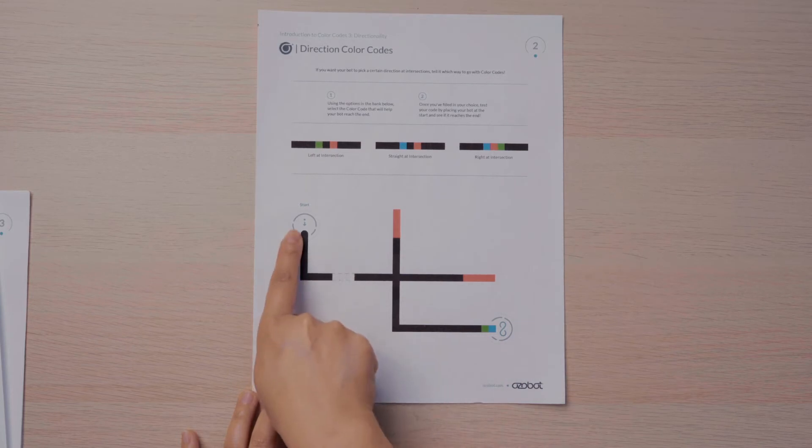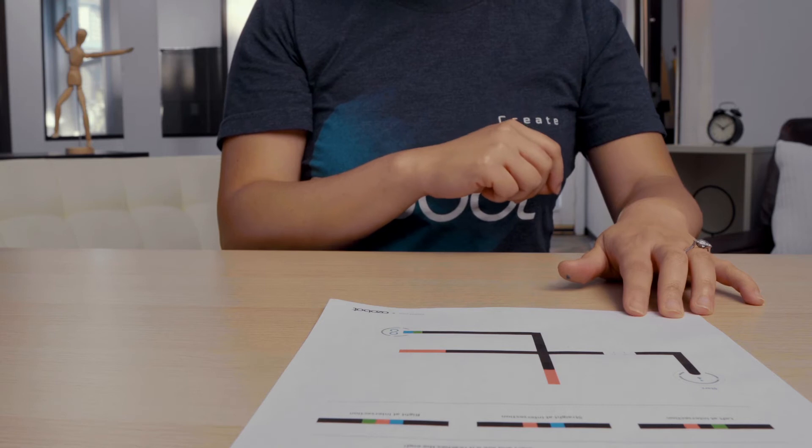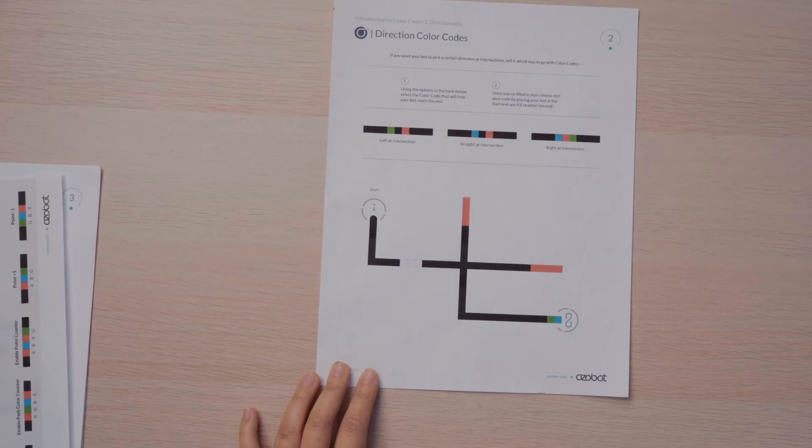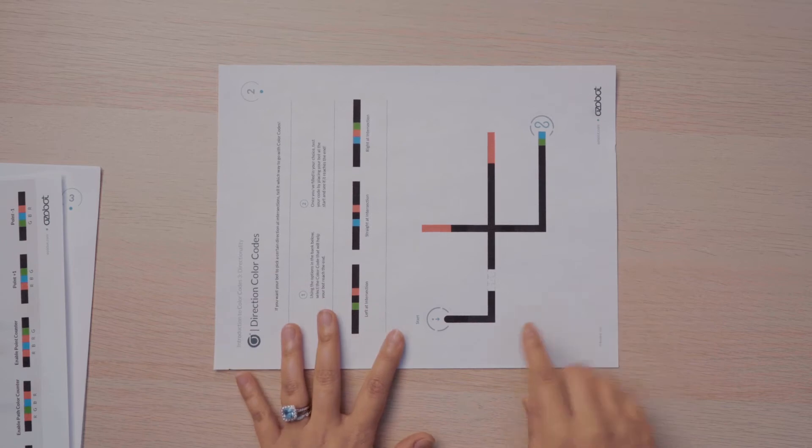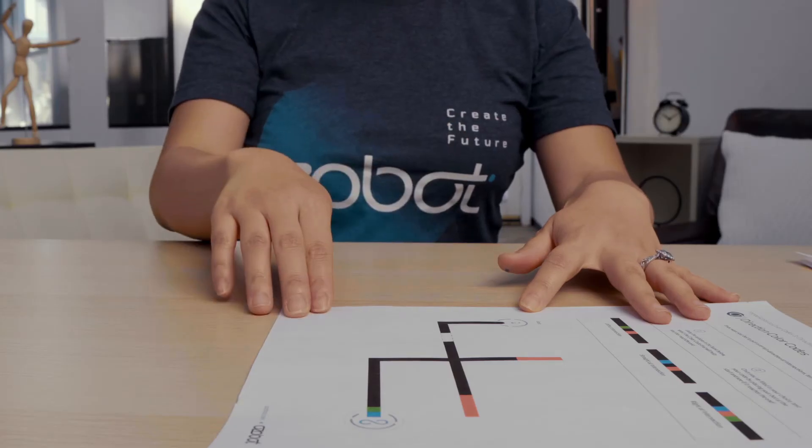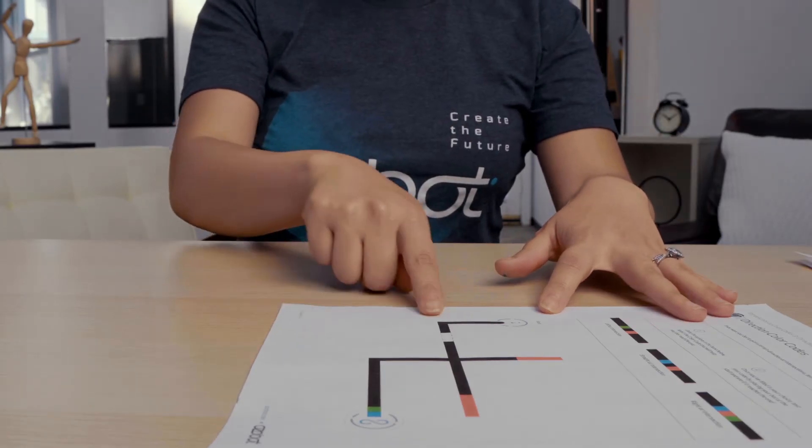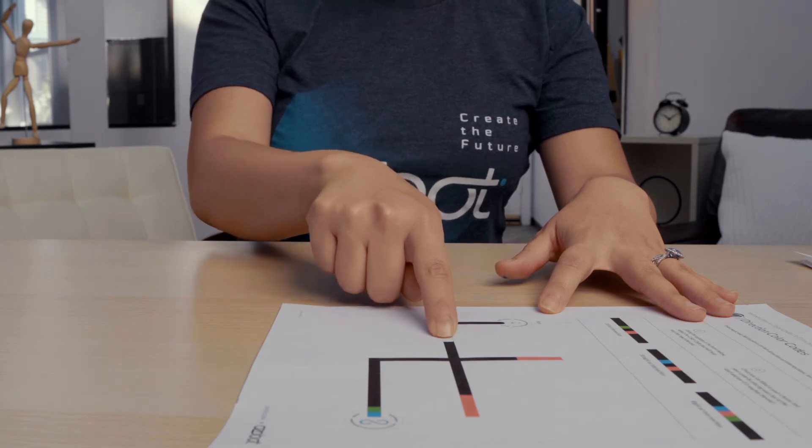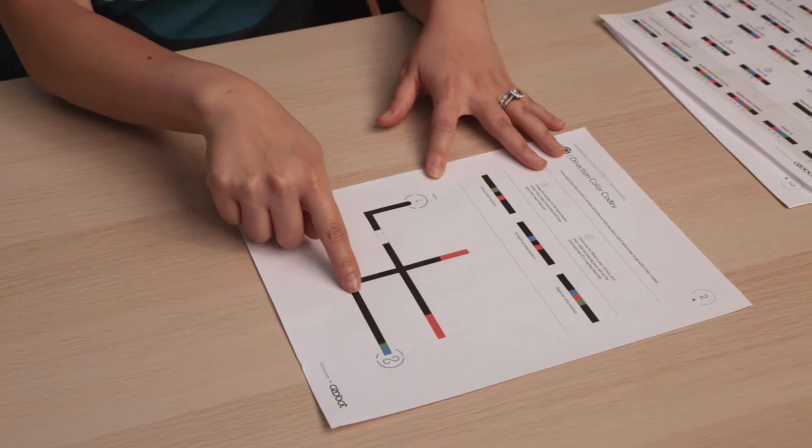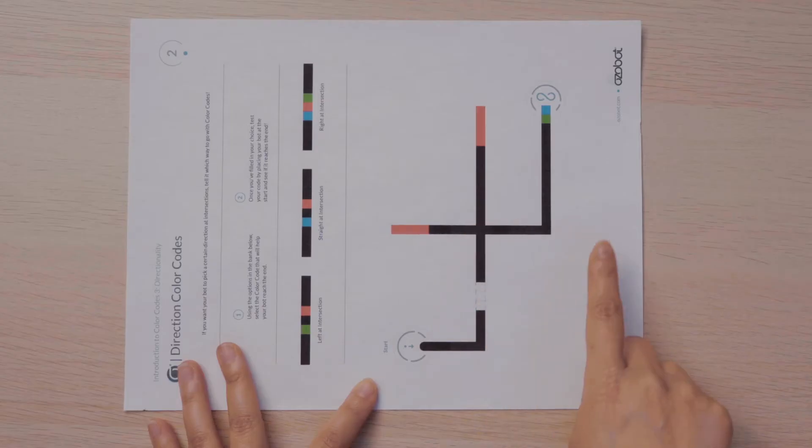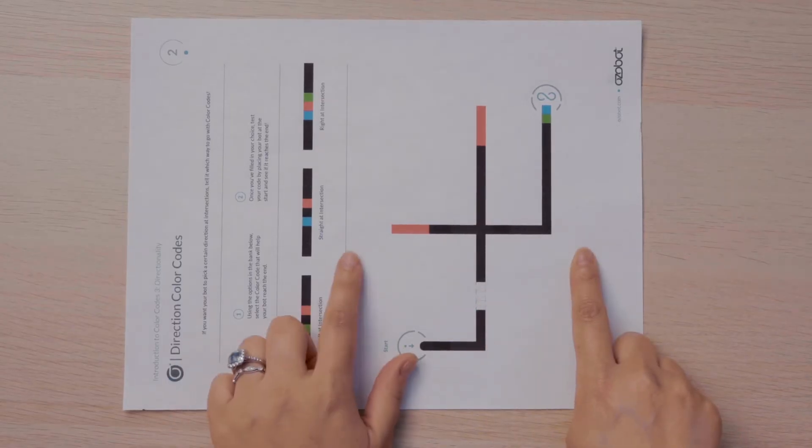If I put my bot here and I want it to end here, I need to figure out which color code to use. I can do this by turning my paper to face the same direction as me. This will help me determine which way the bot needs to travel. If I know that my bot will be running over this color code and I want it to travel over here, it needs to turn right or left.